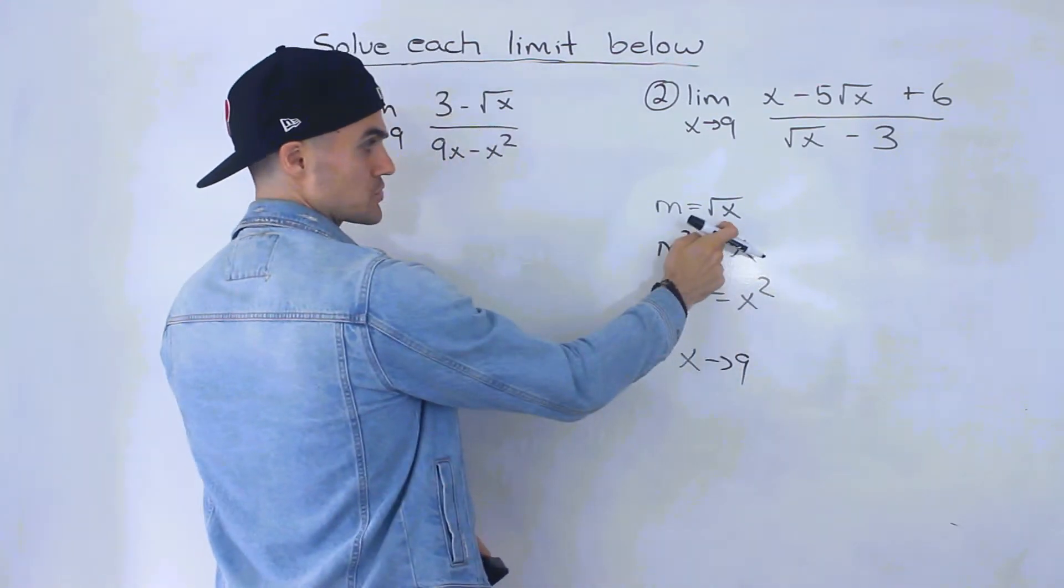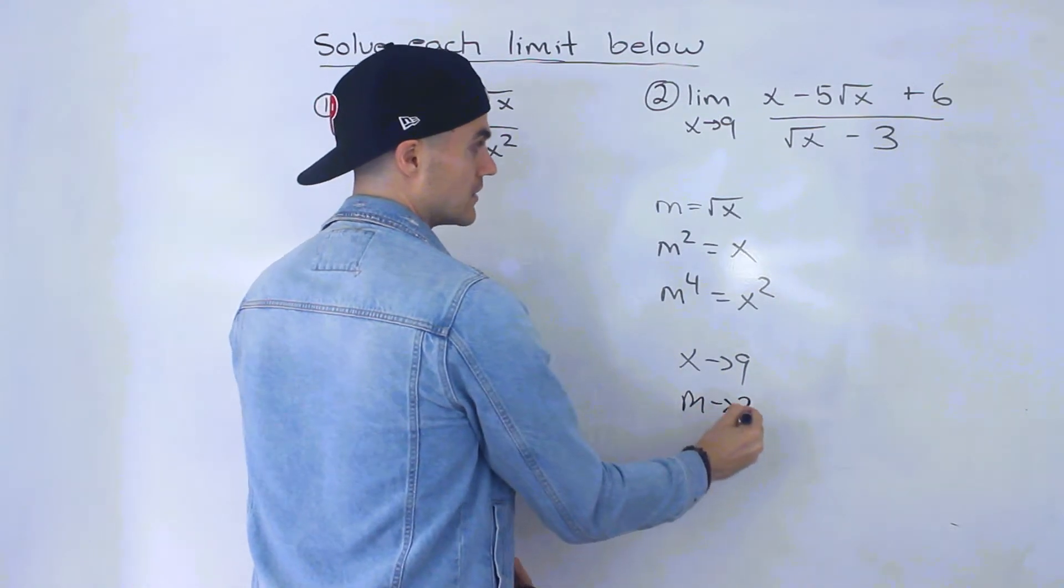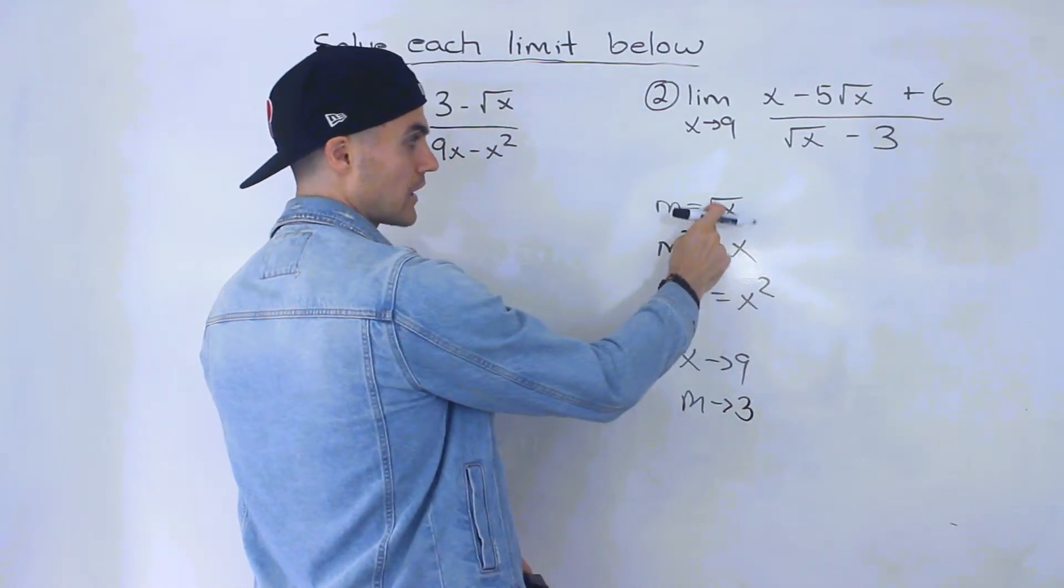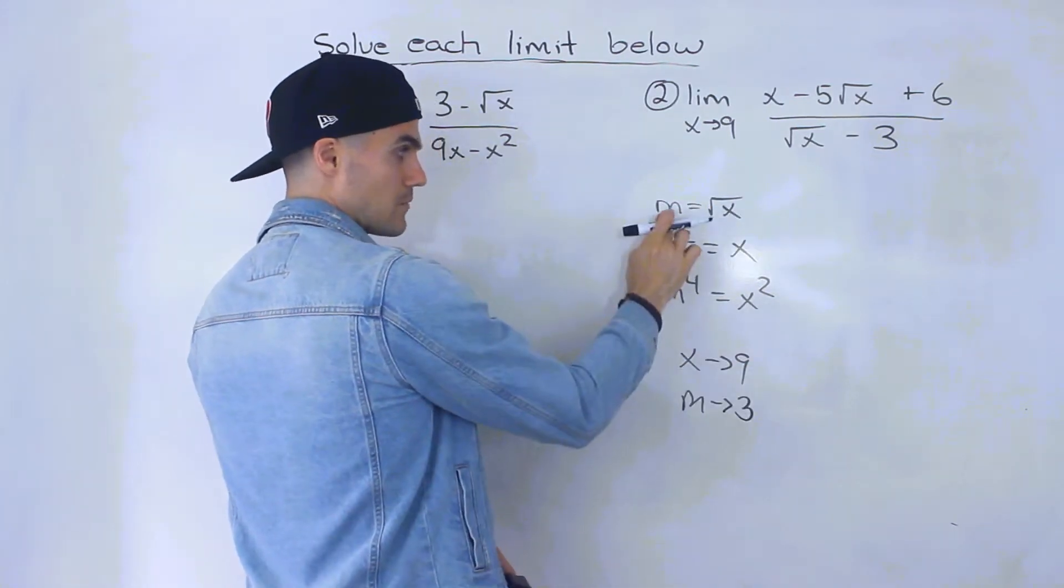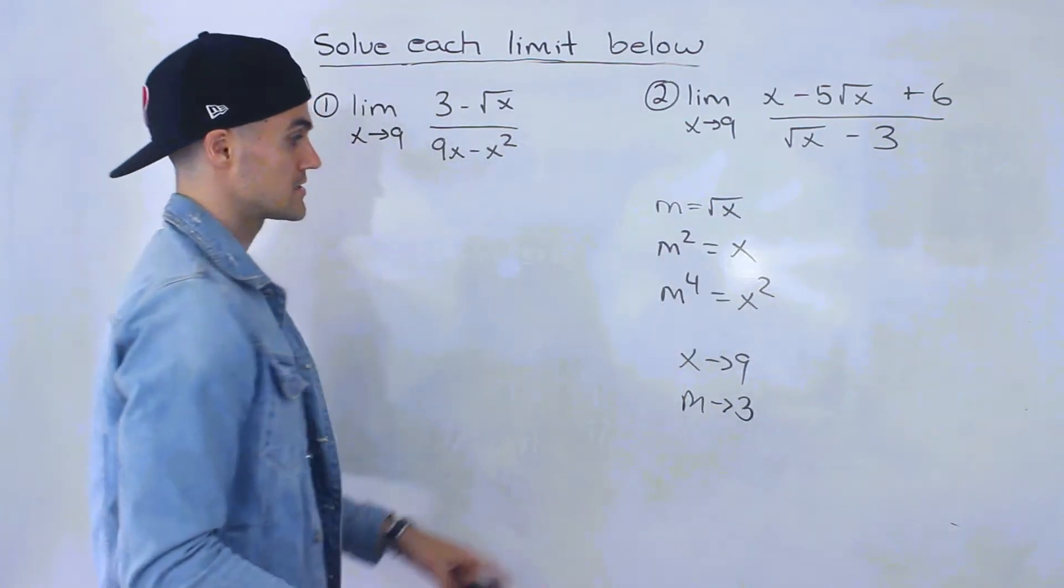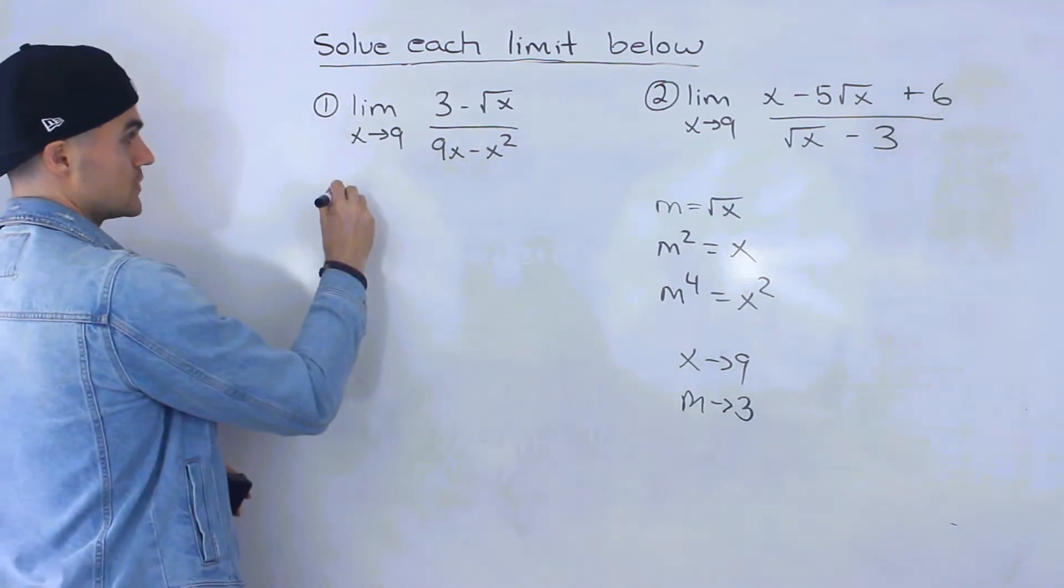As x approaches 9, m is going to approach 3, because the square root of 9 is 3. So as x goes towards 9, m goes towards 3. We can now substitute for x approaching 9.